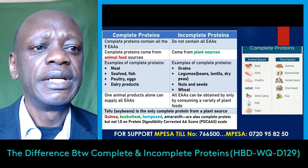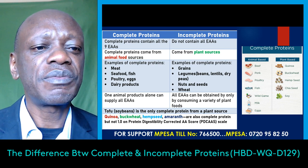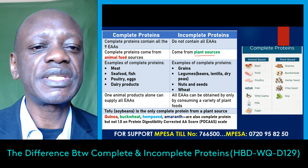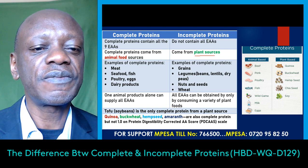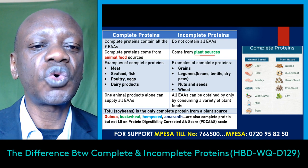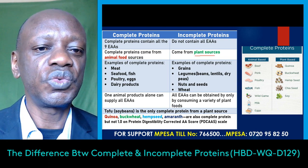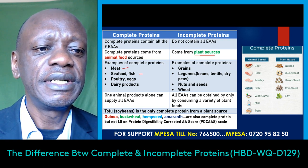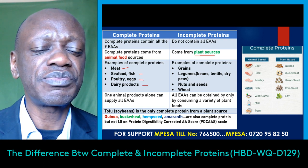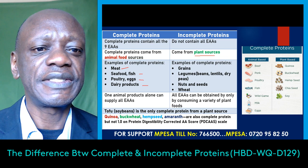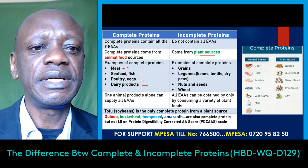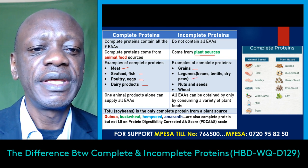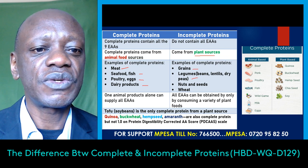The second distinction is that complete proteins come mostly from animal food sources, whereas incomplete proteins come from plant sources. This doesn't mean plant sources are inferior to animal protein sources — it only means you need to know how to combine various plant sources to get all the essential amino acids. Examples of complete proteins include meat, fish, poultry, eggs, and dairy products such as cheese. Examples of incomplete proteins are grains, legumes such as beans and lentils, nuts, seeds, and wheat — mostly plant sources.